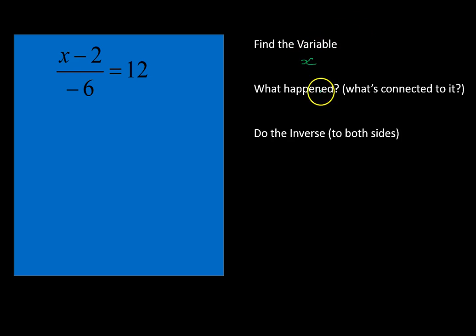Let's look at our next question: x minus 2 divided by negative 6 equals 12. We're going to follow those same steps—find our variable x and what happened to it. Two steps: we have it divided by negative 6, and we also have x minus 2. Those are the two things connected to x, the two operations. We're going to first remember that this is like an implied grouping symbol, so we're going to do that last and get rid of the fraction first.